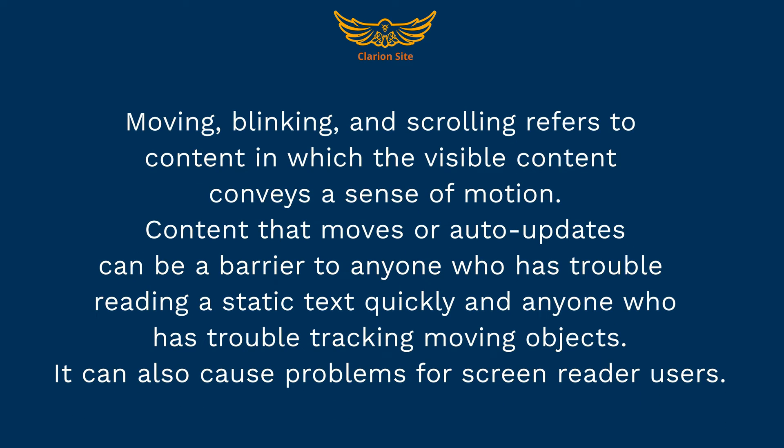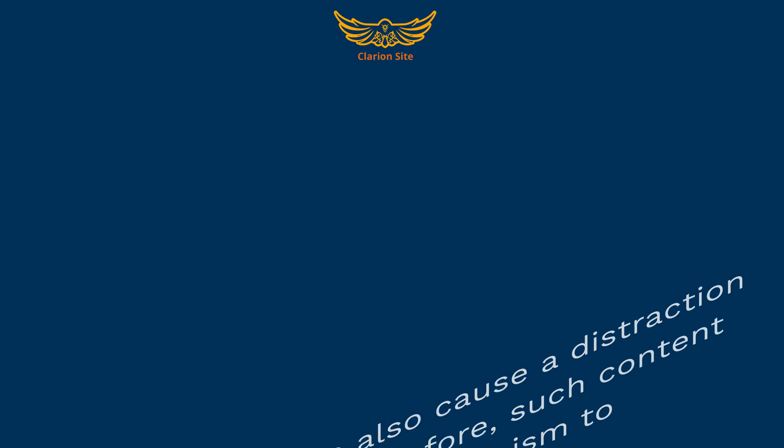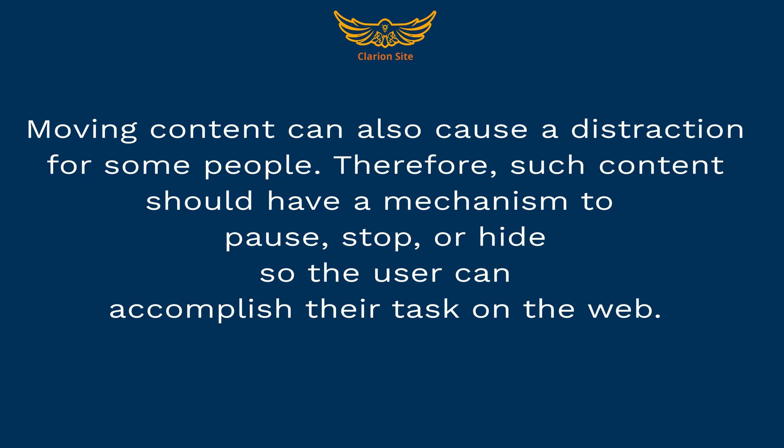Moving, blinking, and scrolling refers to content in which the visible content conveys a sense of motion. Content that moves or auto-updates can be a barrier to anyone who has trouble reading static text quickly, anyone who has trouble tracking moving objects, and screen reader users. Moving content can also cause distraction for some people. Therefore, such content should have a mechanism to pause, stop, or hide so the user can accomplish their task on the web.